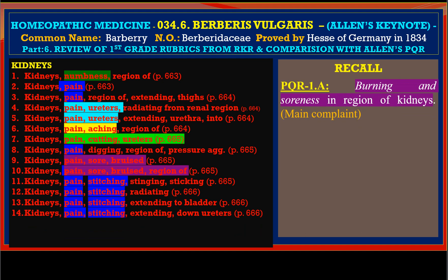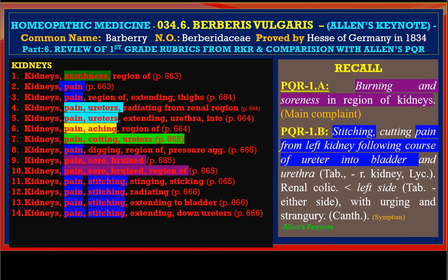We find kidney pain stitching. For stitching we have four rubrics extending to bladder, radiating extending down to ureter. In PQR1B of Allen's keynote: stitching cutting pain left kidney following the course of the ureter into the bladder. So these are the symptoms which are very, very significant we carry with Berberis Vulgaris, and they are represented in both the Kent Repertory and Allen's keynote.